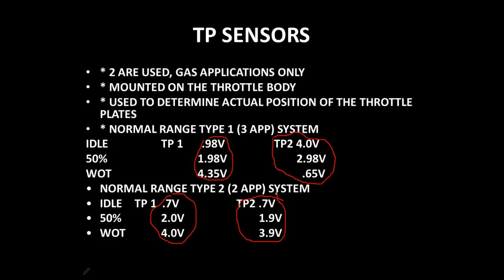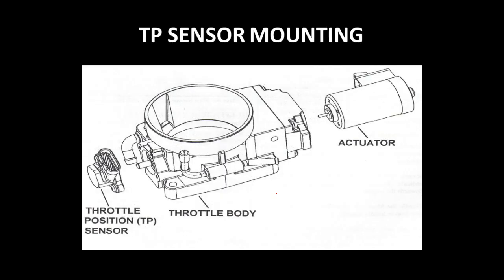The whole point is you need to know which type of system you have to be able to diagnose it correctly. The TP sensor is bolted on the side of the throttle body, and the motor assembly is bolted on the opposite side of the throttle body to control the position of the throttle plates.